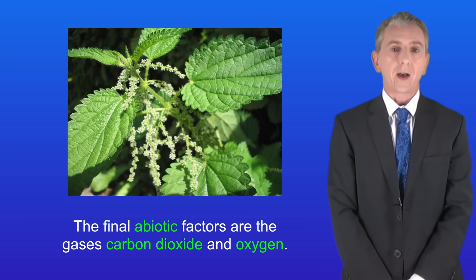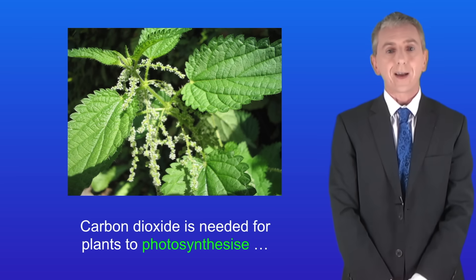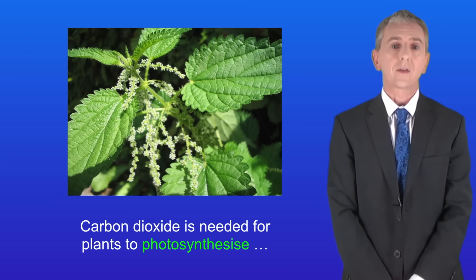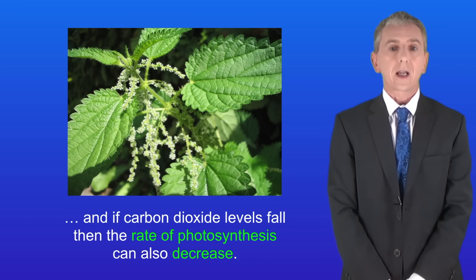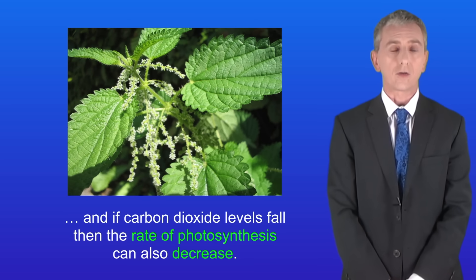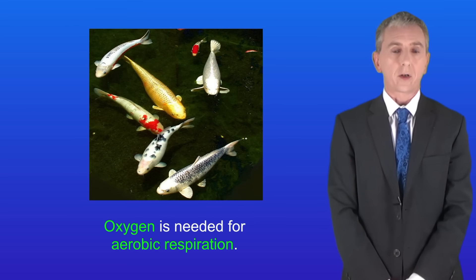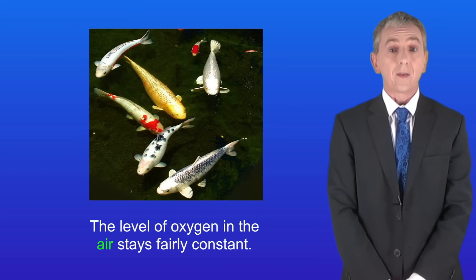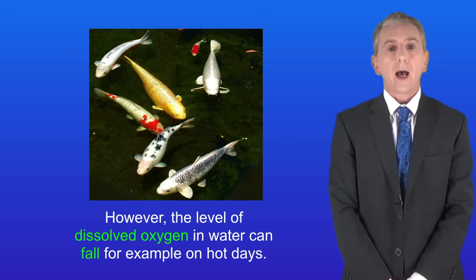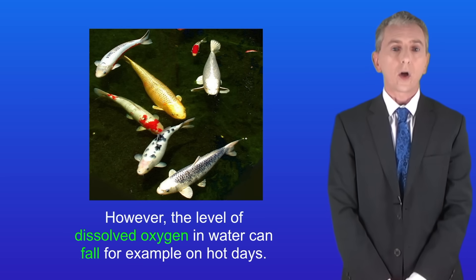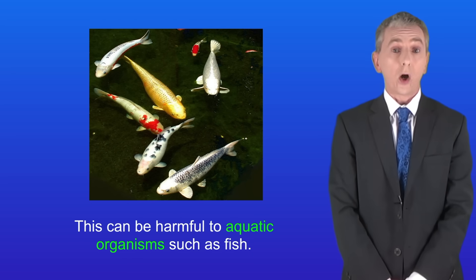The final abiotic factors are the gases carbon dioxide and oxygen. Carbon dioxide is needed for plants to photosynthesize, and if carbon dioxide levels fall, then the rate of photosynthesis can also decrease. Oxygen is needed for aerobic respiration. The level of oxygen in the air stays fairly constant; however, the level of dissolved oxygen in water can fall — for example on hot days — and this can be harmful to aquatic organisms such as fish.